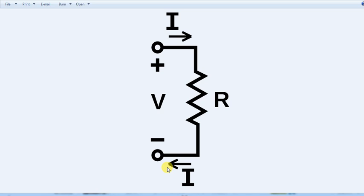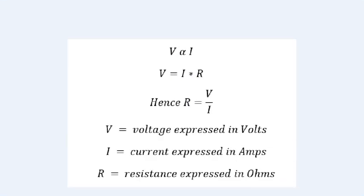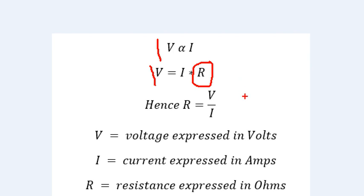V is directly proportional to I. We have to explain all these conditions. If we want to say V is directly proportional to I, it is also directly proportional to R, which is the resistance. What is resistance? Resistance is the opposition to current flow. If we want to calculate how much resistance there is, we can calculate it.